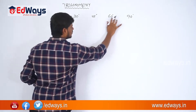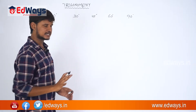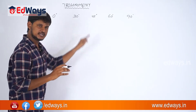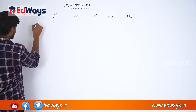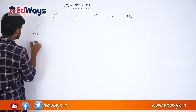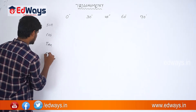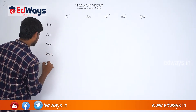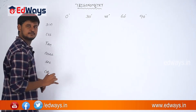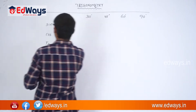These are 5 specific angles we found in the earlier class. Now let us write all the trigonometric ratio values in a tabular column. In the vertical column I am taking sin, cos, tan, and then their reciprocals — cosecant, secant, and cot.